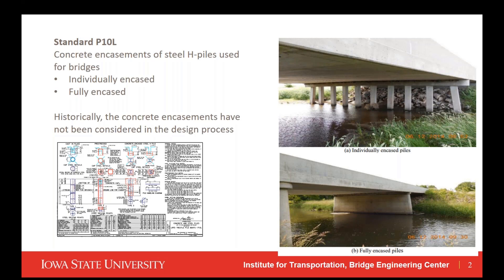Currently in the state of Iowa, a lot of our short to medium span bridges are constructed — their substructures are designed and constructed using the standard P10L. It's a steel H-pile that's encased either individually or fully in concrete to an elevation about three to four feet below the stream or riverbed. Historically, these concrete encasements have not been considered in the design process, yet intuition would indicate there is additional strength provided by these encasements. We completed a project looking at what additional strength the concrete encasements would provide, specifically on individually encased piles.